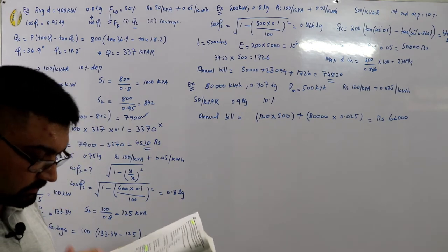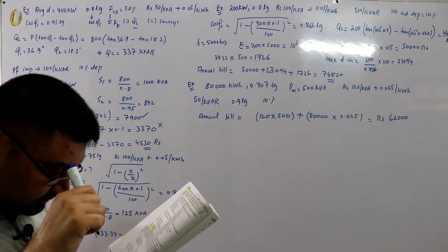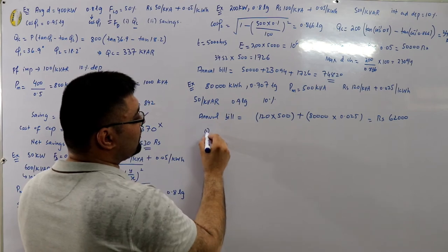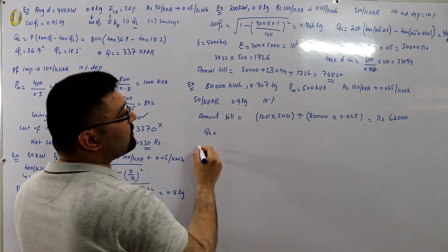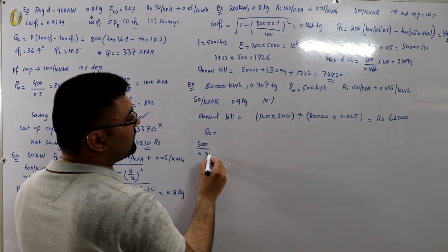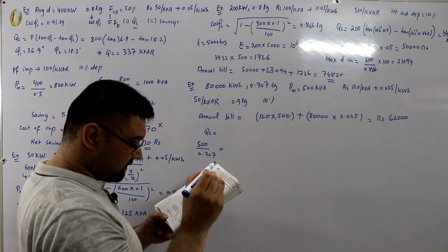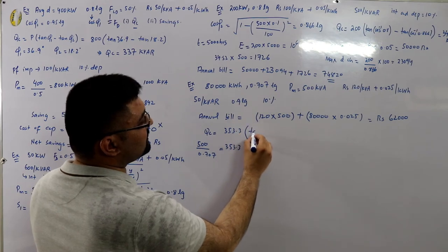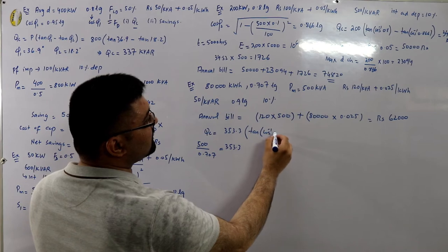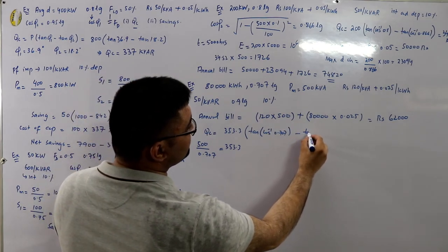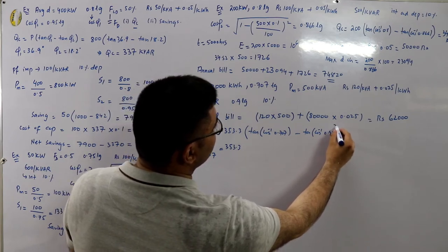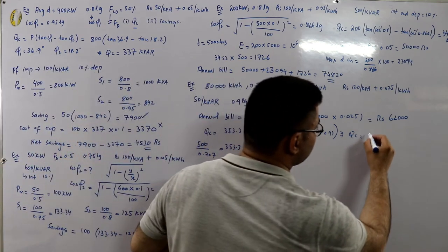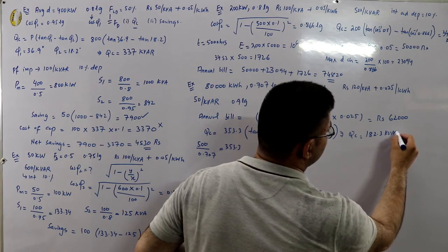For the phase advancing equipment: maximum demand P = 500 kVA × 0.707 = 353.3 kilowatts. Qc = P × (tan φ₁ − tan φ₂), where φ₁ = cos⁻¹(0.707) and φ₂ = cos⁻¹(0.9). The capacitor rating Qc = 182.3 kVArs.